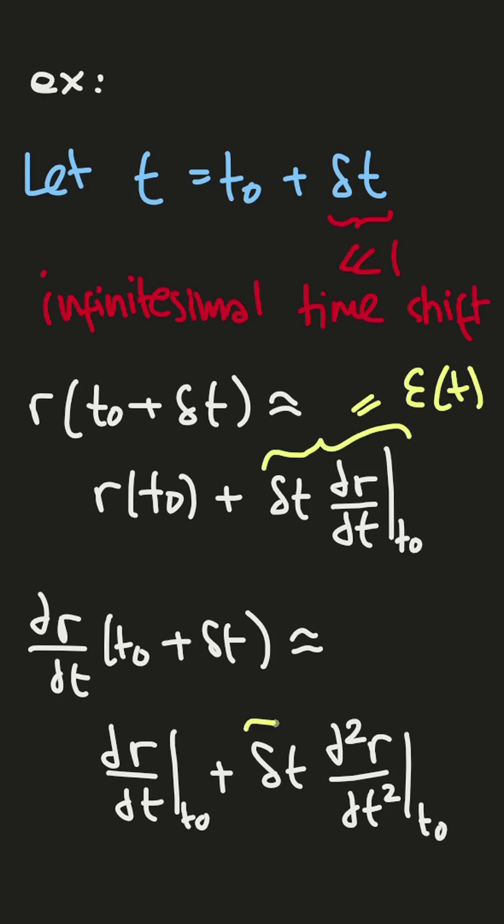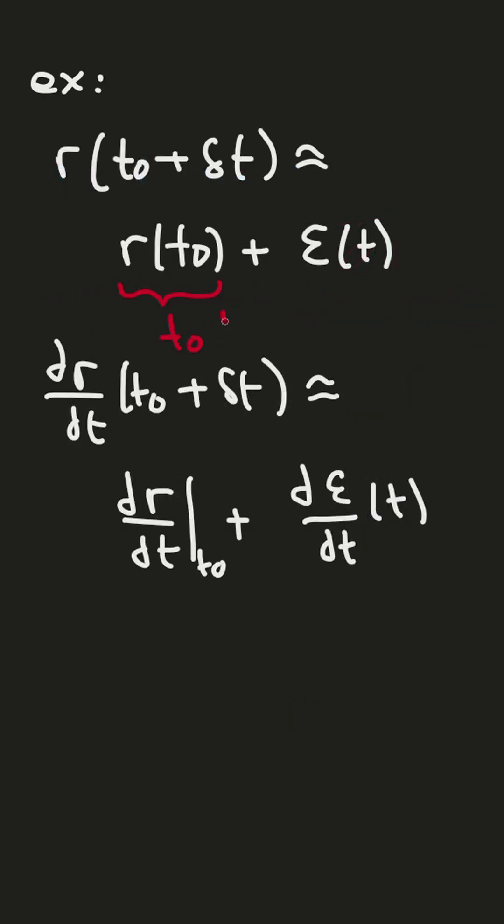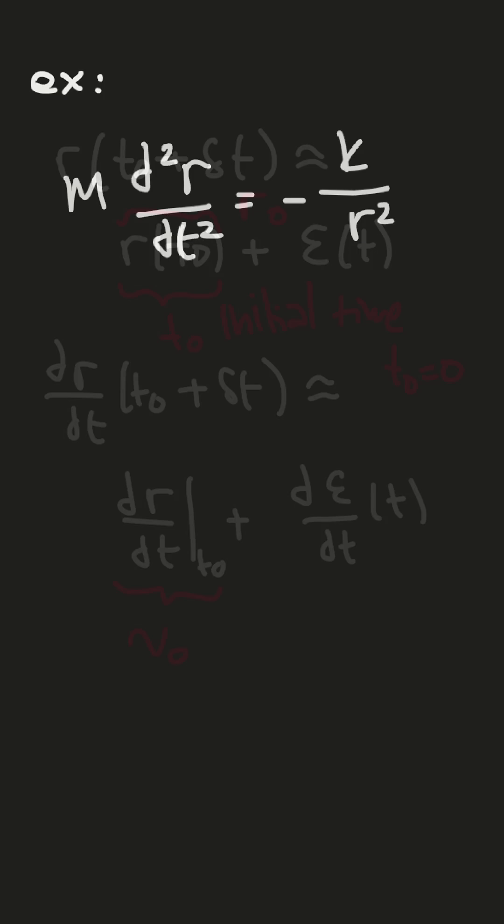denote as epsilon and the first derivative of epsilon with respect to t. Here t0 is about initial time, so I choose this equals 0, and then this is r0, and so on. For this is about v0. So if I plug in those time shifts to our differential equation, we